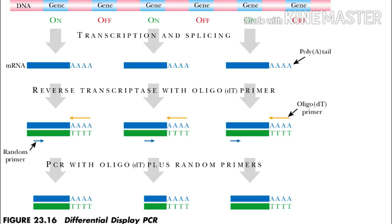These two primers ensure that there are not too many or too few amplified fragments. The result is the amplification of many different DNA segments corresponding to each of the messenger RNA molecules in the original mixture. Gel electrophoresis is then used to separate the different components, giving a series of DNA bands corresponding to each of the mRNAs being made in the cells analyzed.